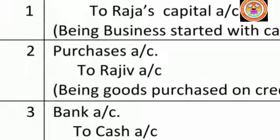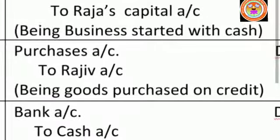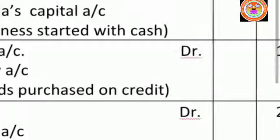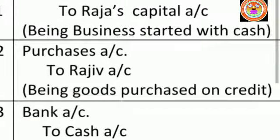Raja started business with cash — this is the first transaction. According to our real account rule, cash comes into the business, so cash account is debited. Then Raja is the giver of the capital. According to the personal account rule — credit the giver — write to Raja's capital account. Amount is ₹3 lakhs on both sides.